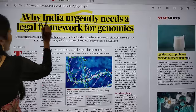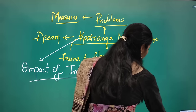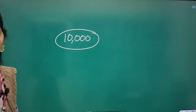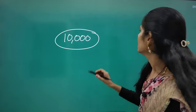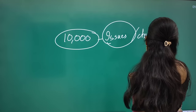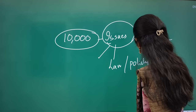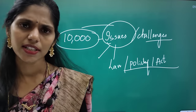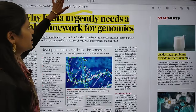Moving to the science page, the first article is: Why India urgently needs a legal framework for genomics. We have had lots of improvements in genomics — recently our Genome India project was successful, sequencing genomes of around 10,000 humans in India. Day by day the price of genetic sequencing has decreased, creating lots of issues. To address these issues and challenges, we need a proper law, policy or act. This topic is from science and technology, and there is a very high chance of getting questions on genomics and related law.